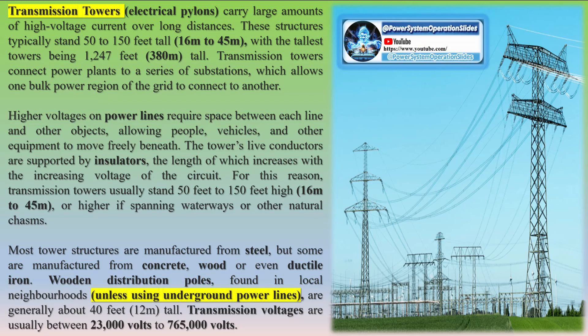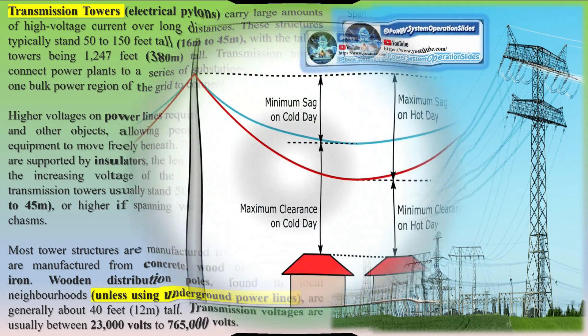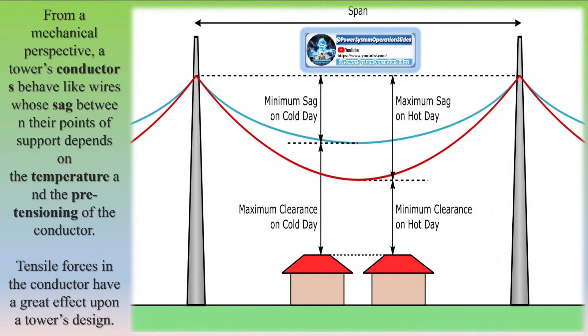A long transmission line is classified as a transmission line with a length more than 250 kilometers or 150 miles. The voltage level is above 133 kV, and line constants are considered as distributed over the length of the line.